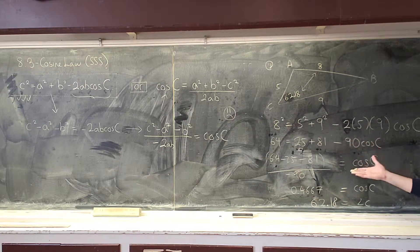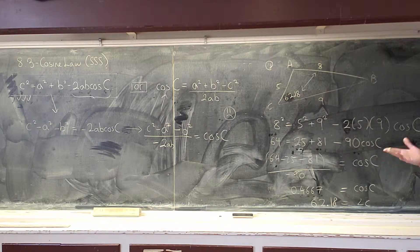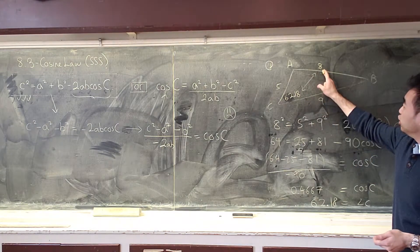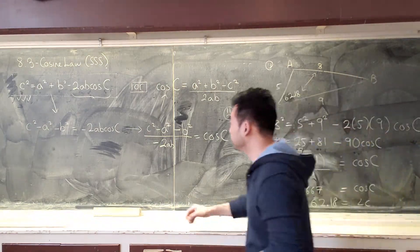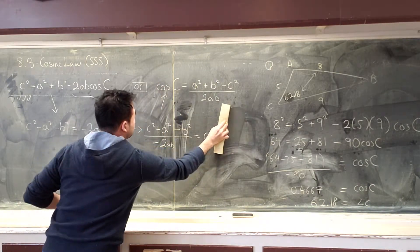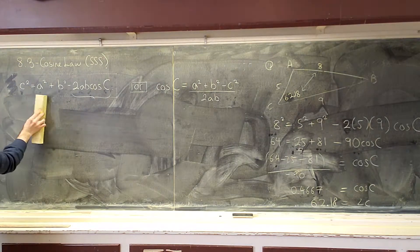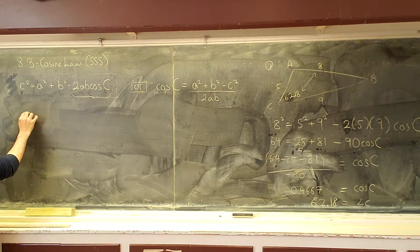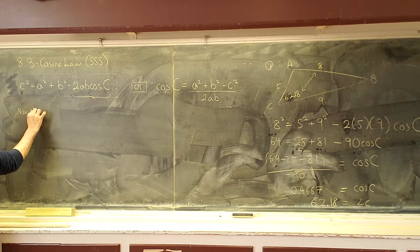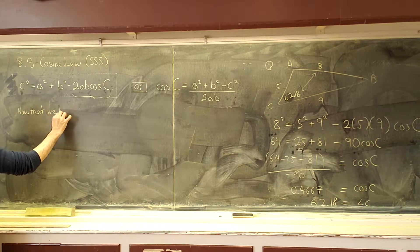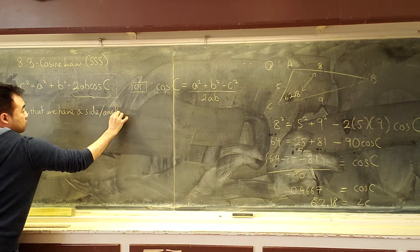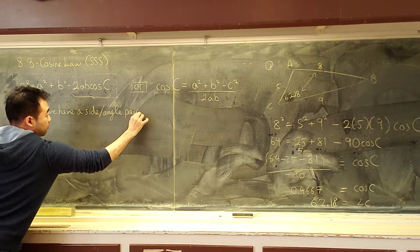You can still do this if you want to. No problem. But just for the sake of exercise, let's take these two and use it to find angle B. Where? Can I erase it? Down here. So, following sine law, now that we have a side angle pair.